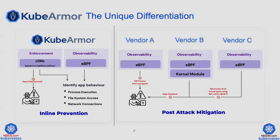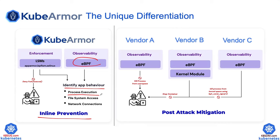What's unique about KubeArmor? Based on my understanding, only KubeArmor does inline prevention across the whole market. You can leverage zero trust: use eBPF for observability to identify application behavior — maybe you only need three processes, two files, two network ports. Once you understand the behavior, you grant those accesses and deny everything else. The denial is enforced via the LSM module — could be AppArmor, BPF-LSM, or SELinux.